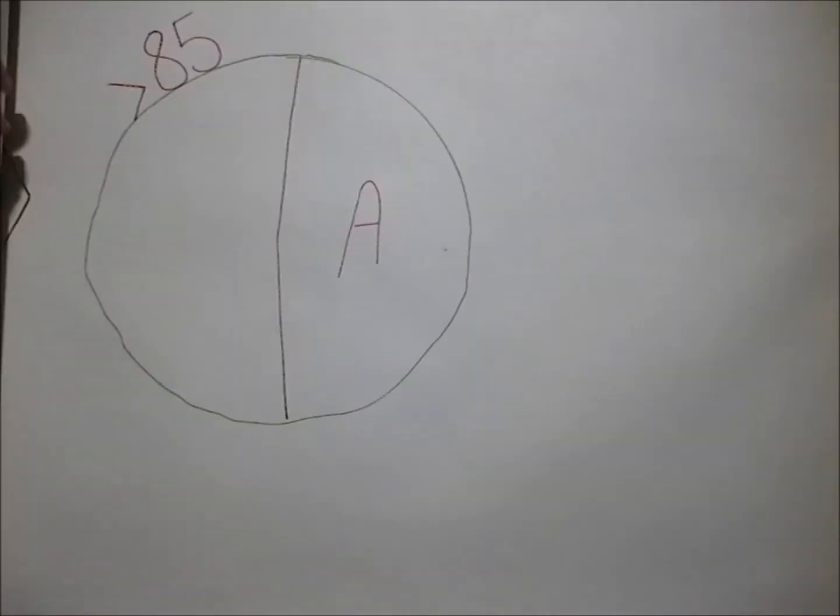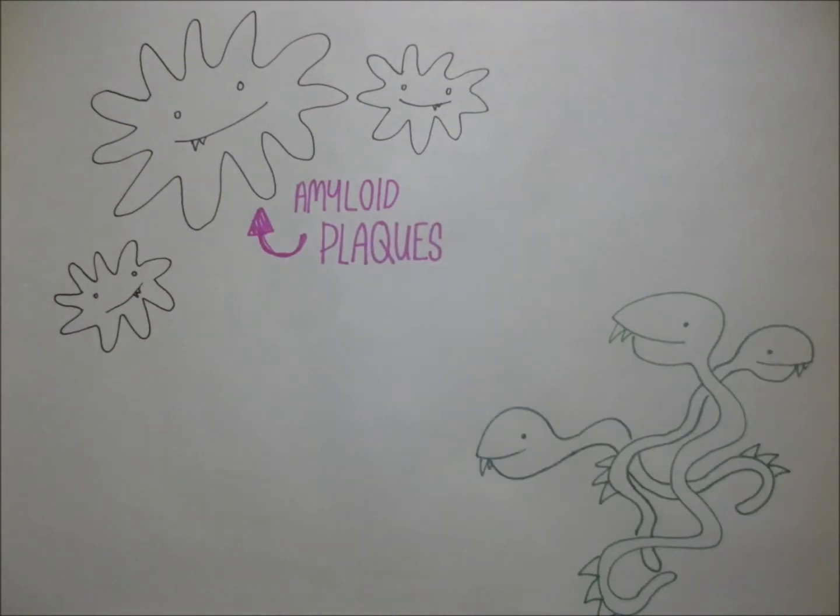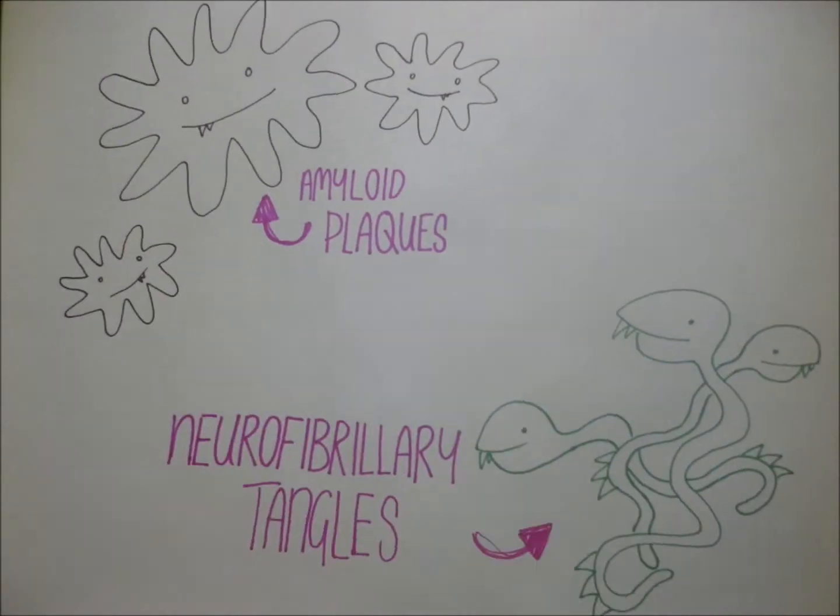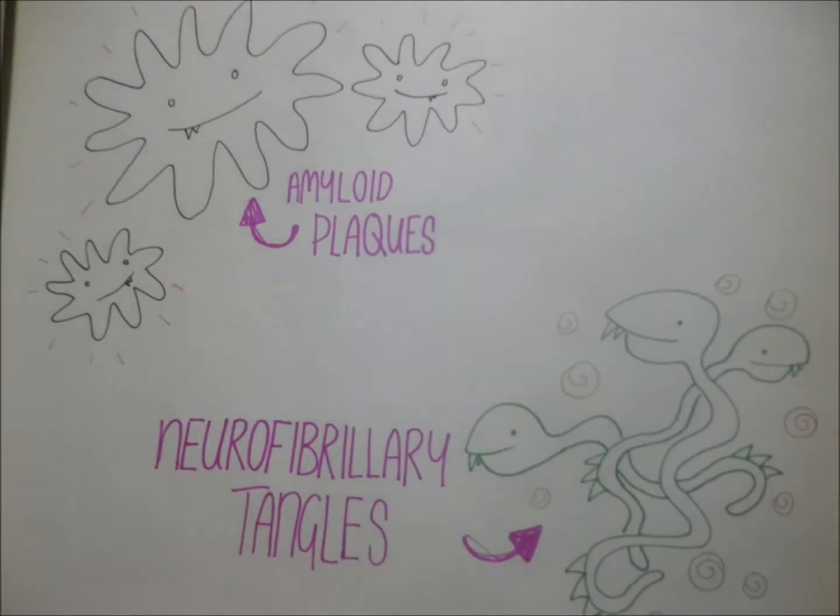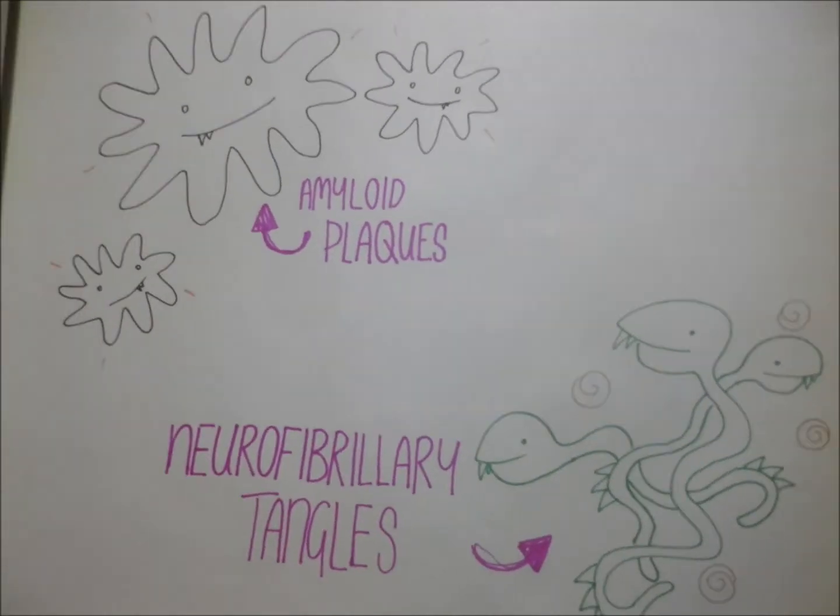Two identifying characteristics within the brain are the build-up of amyloid plaques and the presence of neurofibrillary tangles. These tangles are dying neurons with intracellular accumulations of tau protein.